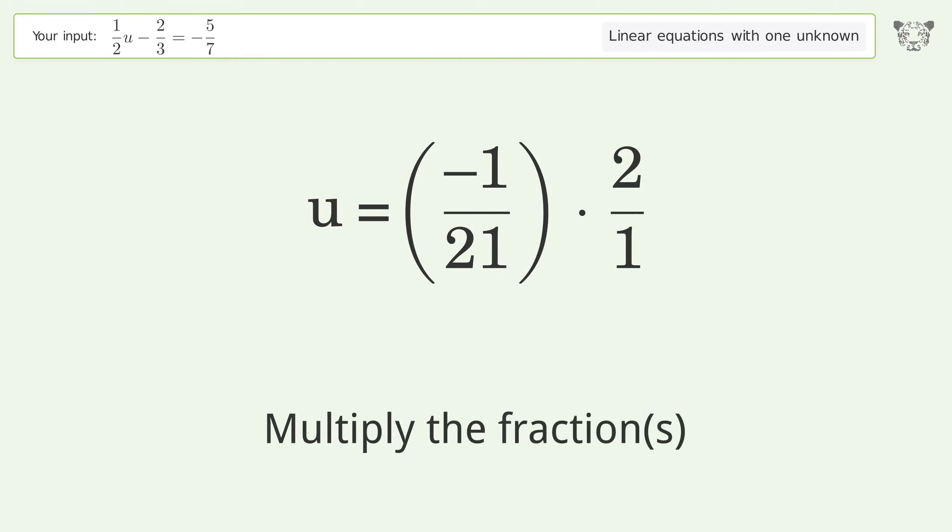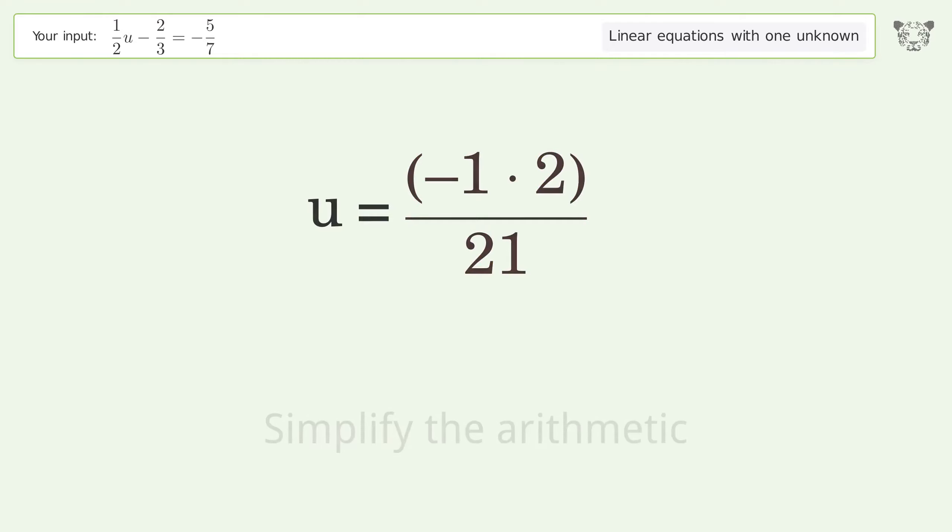Multiply the fractions. Simplify the arithmetic. And so the final result is u equals negative 2 over 21.